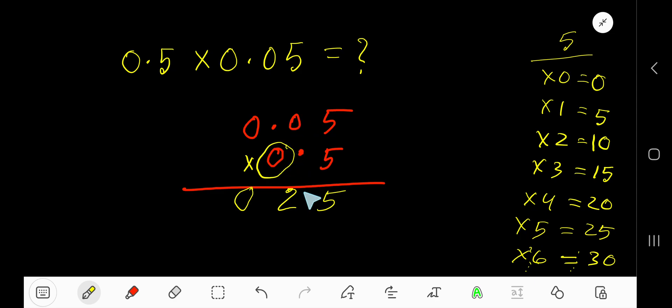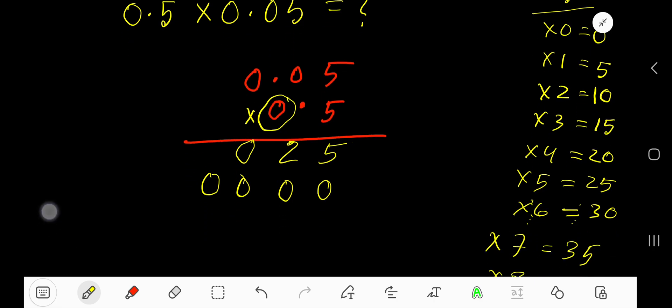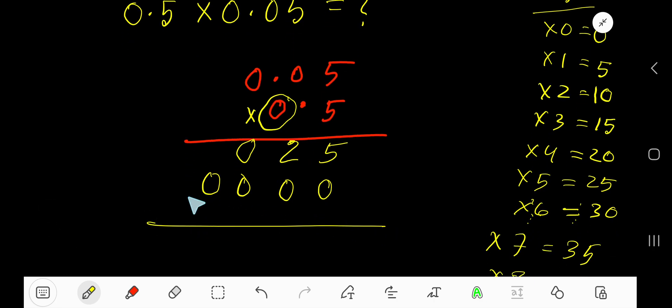0 times 5 is 0, 0, 0 into decimal. Now add: 5 plus 0 is 5, 2 plus 0 is 2, 0 plus 0 is 0, 0.